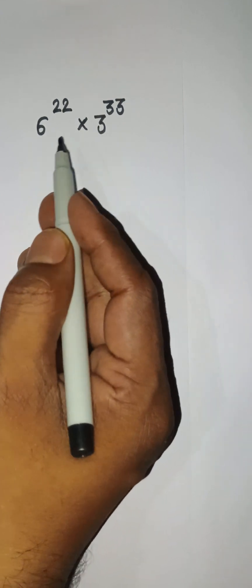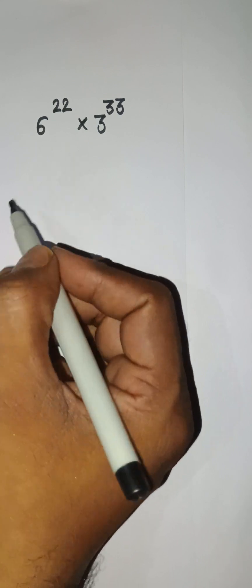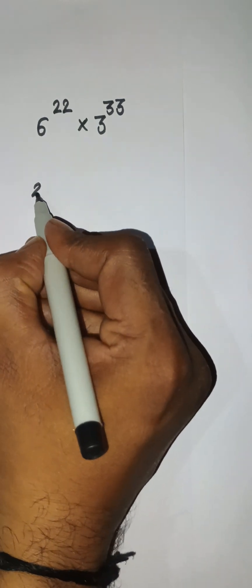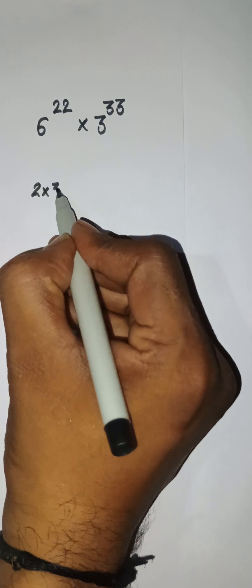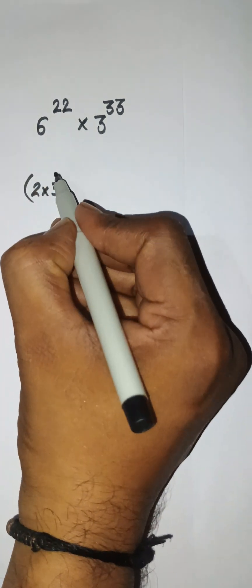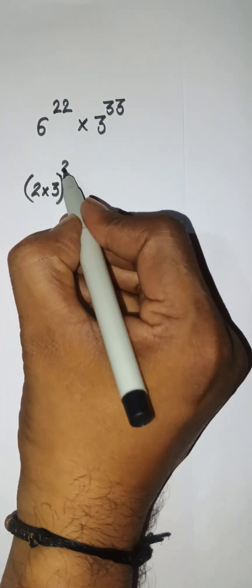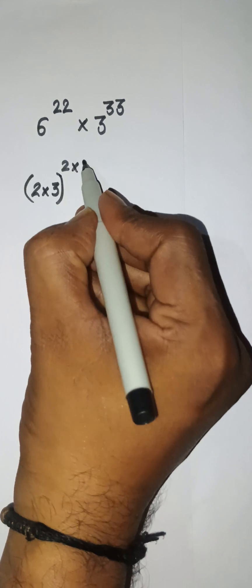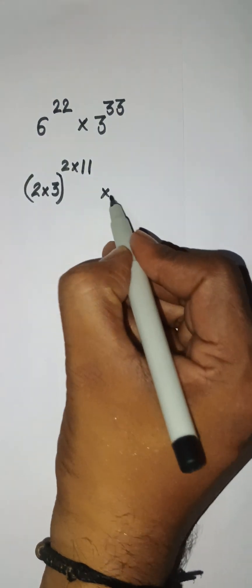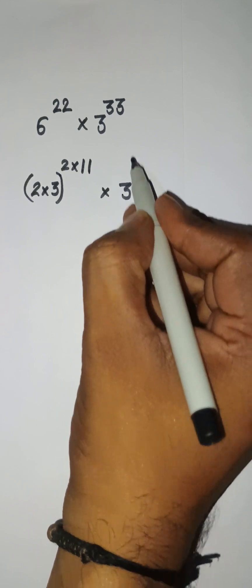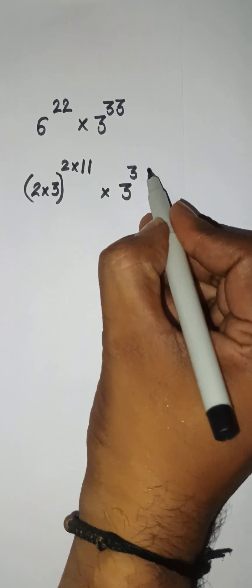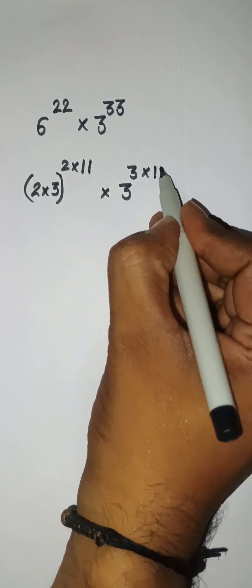Let's solve here using this clue. Here, 6 can be written as 2 multiplied by 3, and the power 22 can be written as 2 multiplied by 11. Similarly, we have 3 to the power 33, and 33 can be written as 3 multiplied by 11.